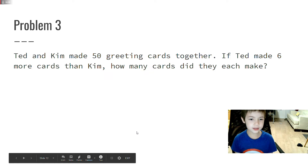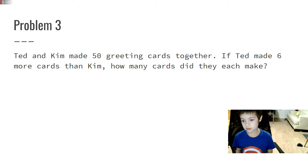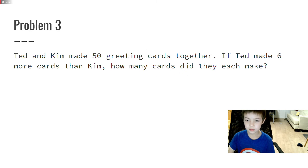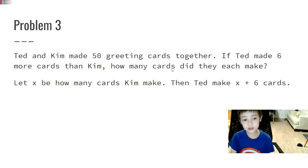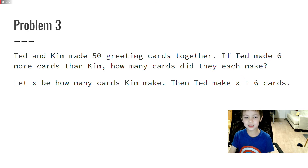Problem 3. Jon and Kim made 50 green cards together. Together means all. It says, if Jon made 6 more cards than Kim, how many cards did they each make? So, let X equal how many cards Kim made. Then, Jon makes X plus 6, because Jon makes 6 more than Kim.